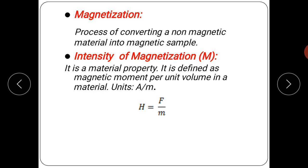Magnetization of solid magnetic materials can be defined as the total magnetic dipole moment mu_M per unit volume. This is known as magnetization.